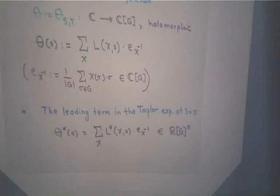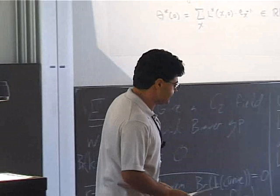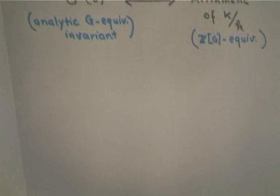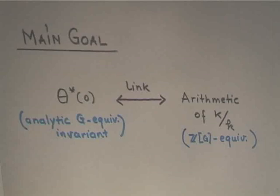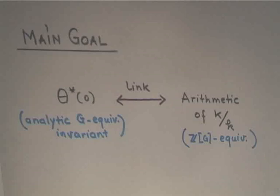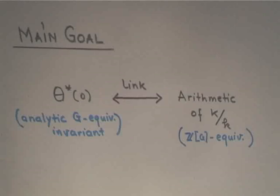The game I'm going to play is this: I want to establish a link between this G-equivariant analytic invariant θ*(0) and the various arithmetic invariants I described before — units U, X, ideal class group A — but I want to understand their Z[G]-module structure, not only their Z-module structure. Let me show you just one facet of this link.